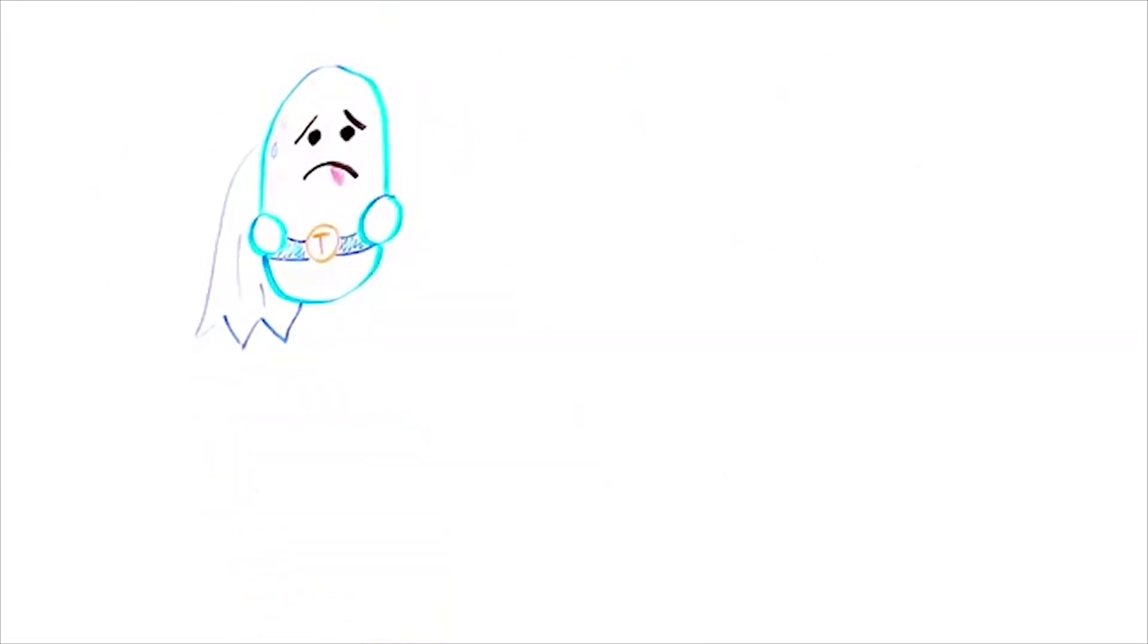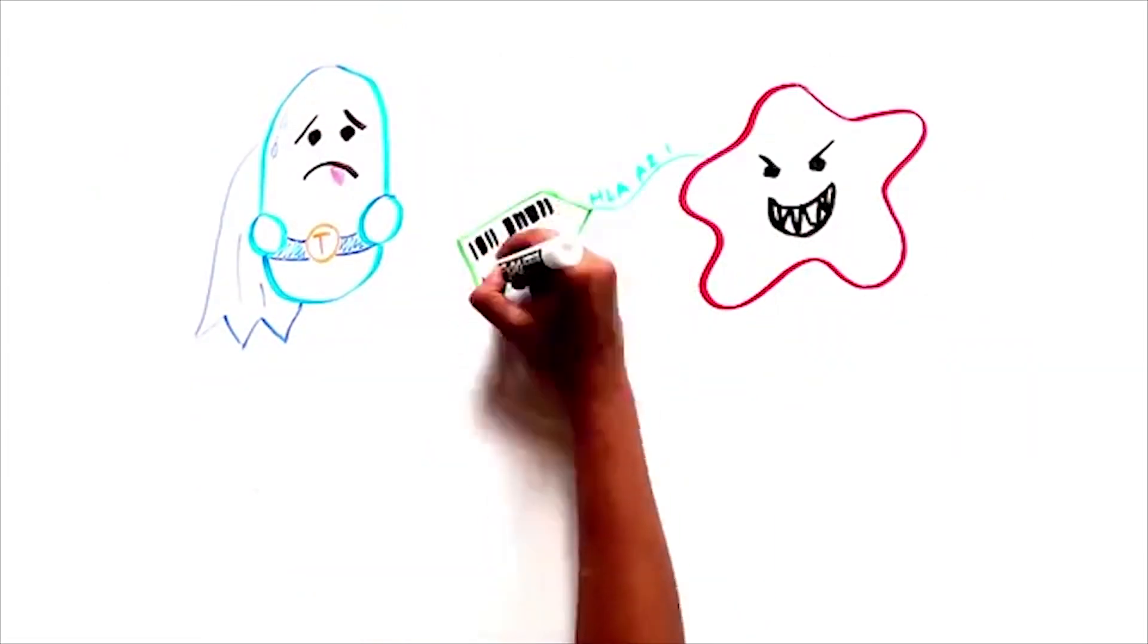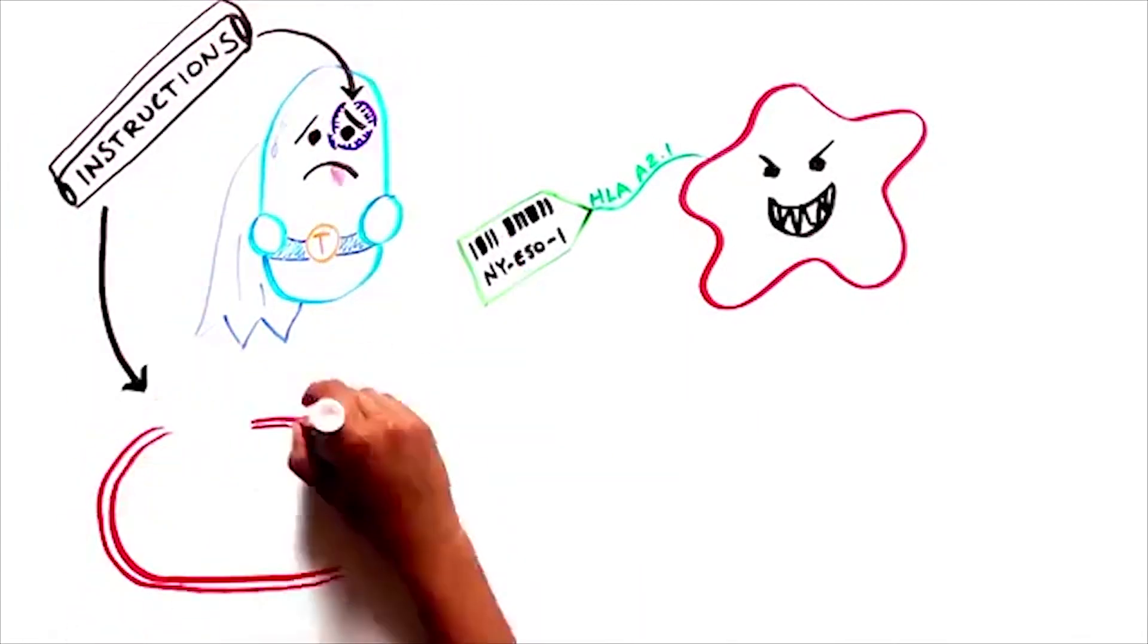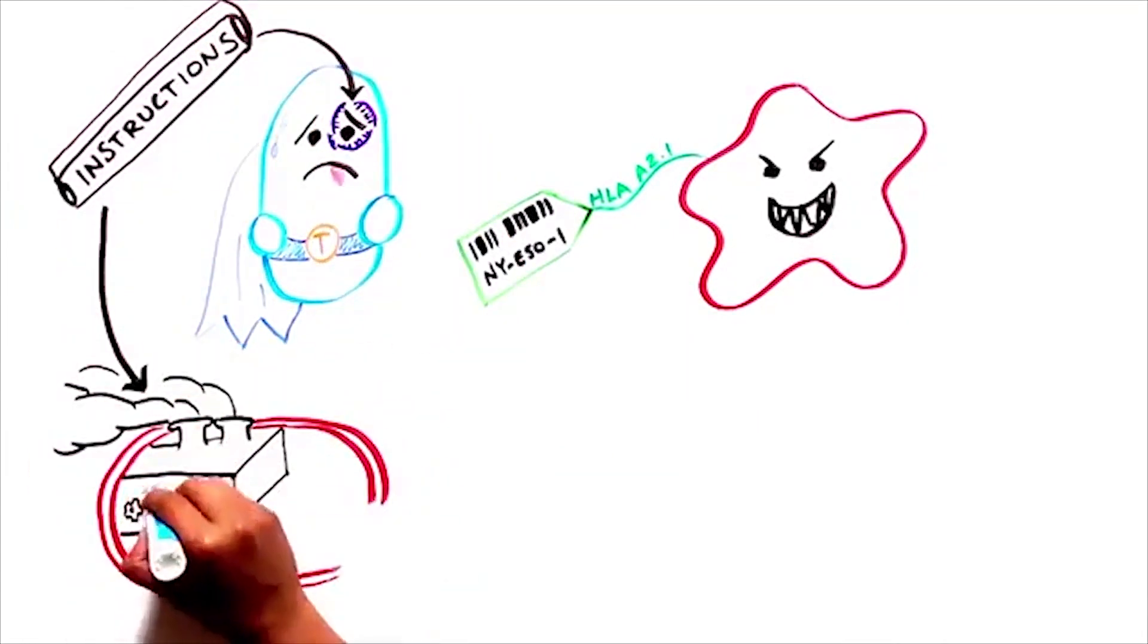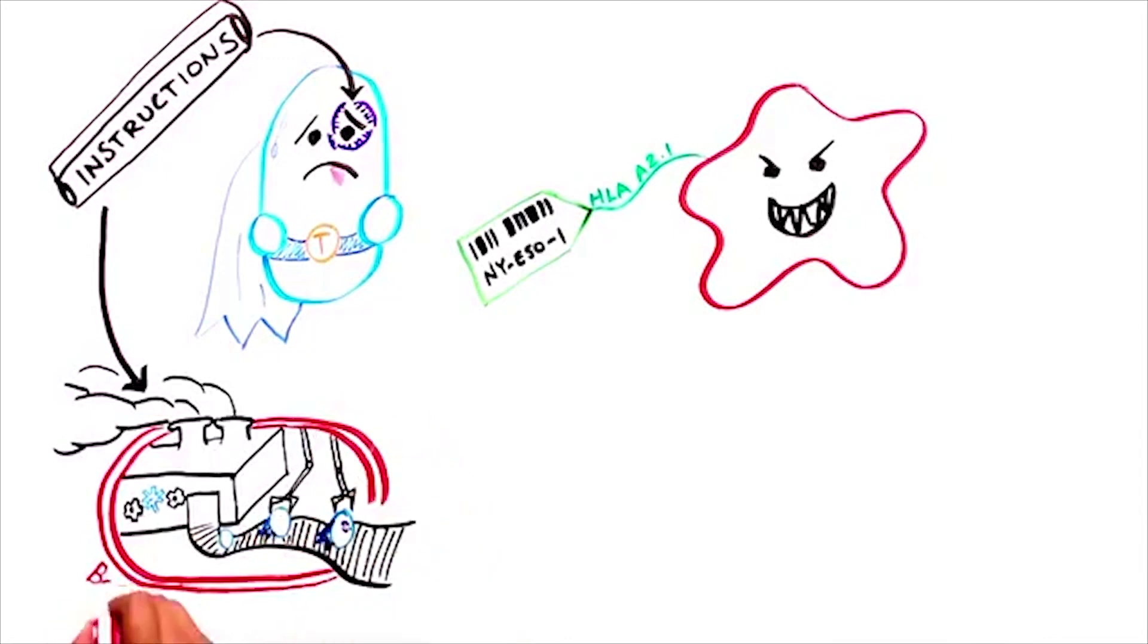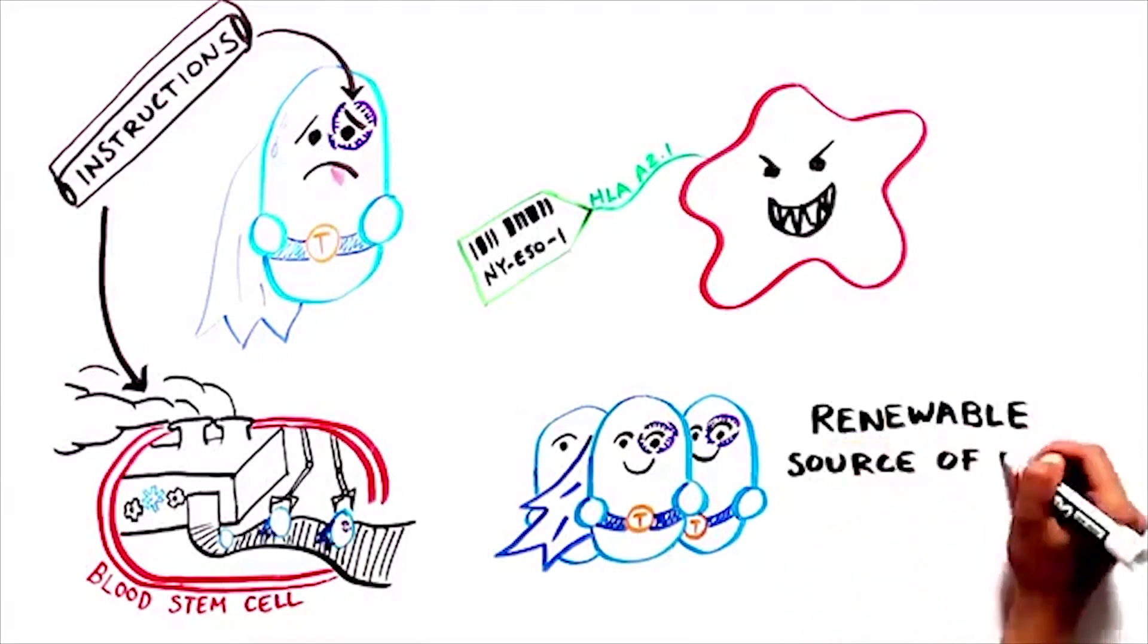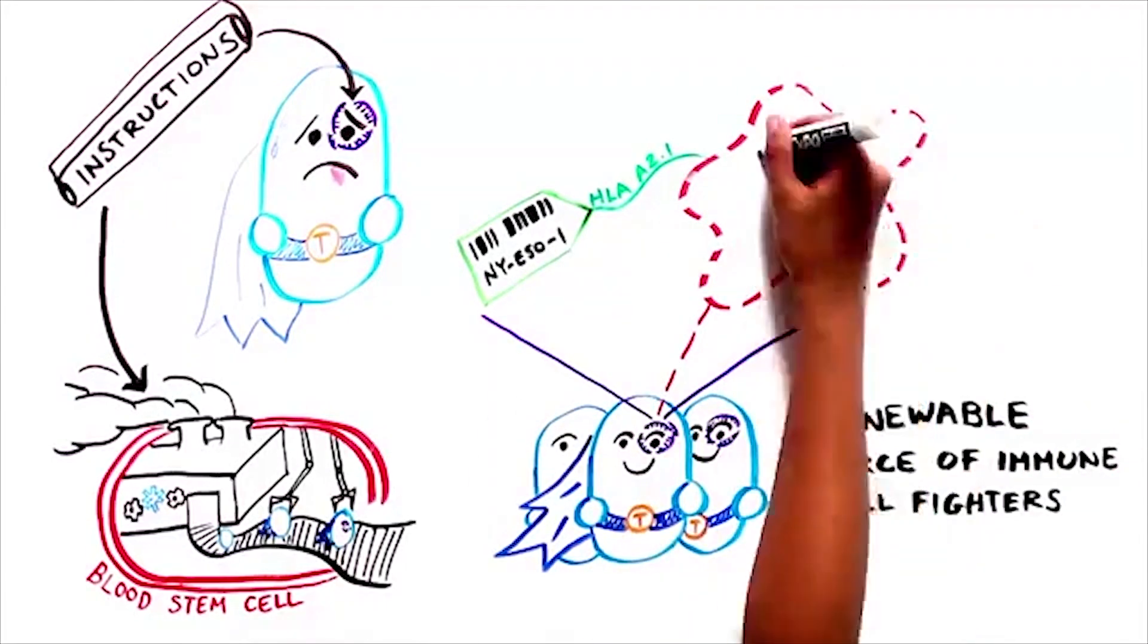Immune cells alone can only attack cancer cells for a few weeks before becoming exhausted. To overcome this, the instructions for detecting and destroying cancer cells will also be programmed into blood stem cells, which will provide the patient's body with a renewable source of immune cell fighters.